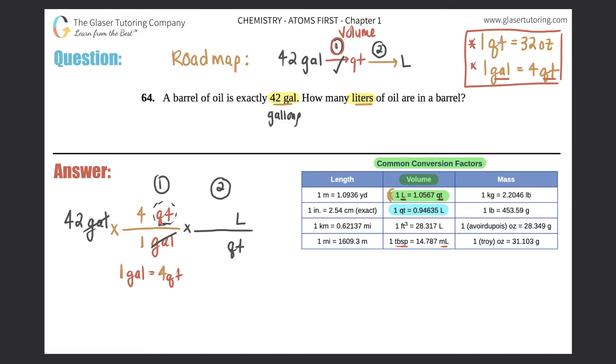And now we use our conversion factor that they gave us. They told us that one liter equals 1.0567 quarts, so one liter - the one will go on the top - and 1.0567 quarts on the bottom. And now the word quart will cancel because they're exactly the same, and you're left with liter, and that's what the question was asking for.